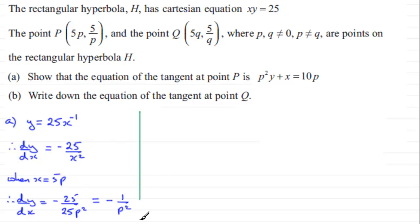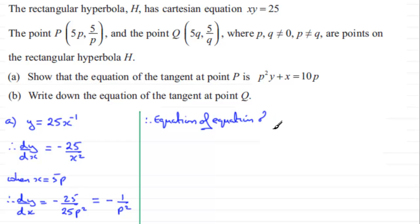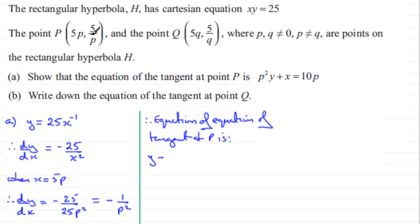So that's the gradient of the tangent at the point P. We're now in a position to find the equation of the tangent at P. Using the form y minus y₁ equals m times (x minus x₁), taking x₁ and y₁ as the coordinates of P, we get: y minus 5/p equals minus 1/p² multiplied by (x minus 5p).